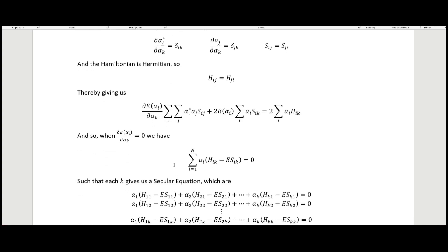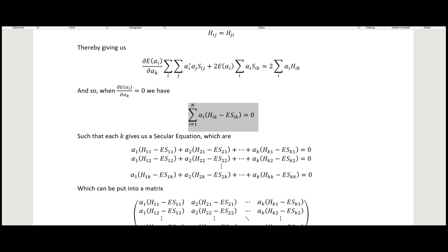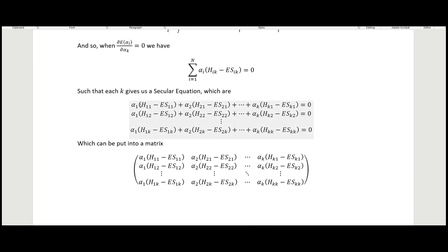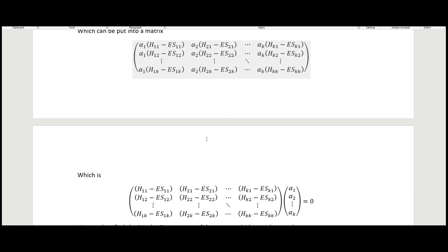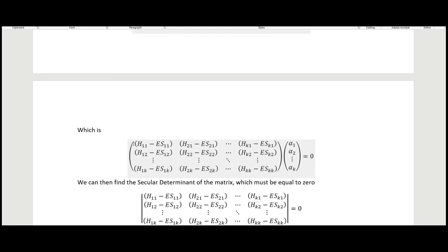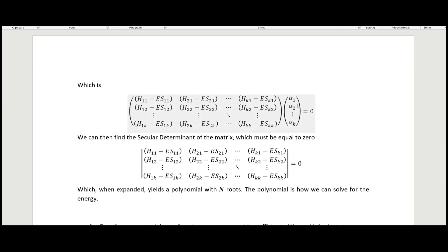Setting the derivative equal to zero gives us k different secular equations. Our secular equations have: alpha_1 times (H_11 minus E times S_11) plus alpha_2 times (H_21 minus E times S_21), and so on up to k. We have k such secular equations, which we put into matrix form with the alpha coefficients arranged in a column vector set equal to zero. We then want to find the secular determinant of this matrix.